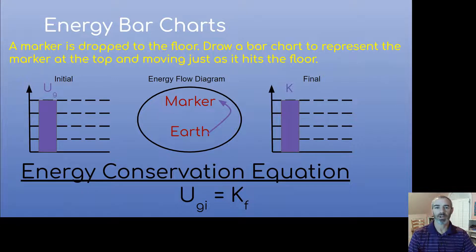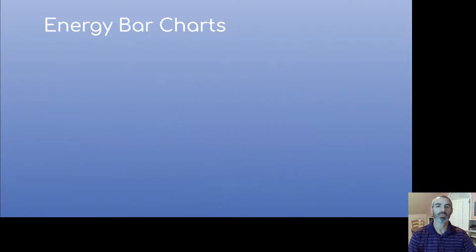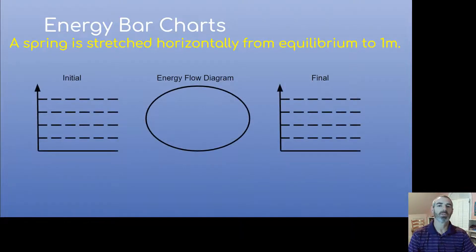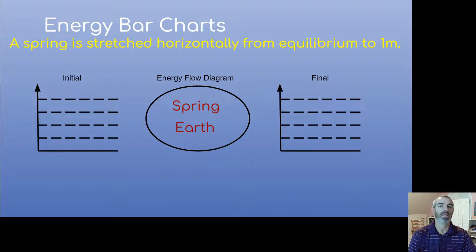Now let's look at a different example. We have a spring stretched horizontally from equilibrium to one meter, like we did in the Hooke's Law lab. We start by defining our system as the spring and the earth. Since the spring doesn't really change height, we could omit the earth, but I like to include it so I don't forget it. So we ask the three questions: is there a spring stretched or compressed? It's before the spring is stretched, so no. Nothing has a height greater than zero. Nothing's moving.